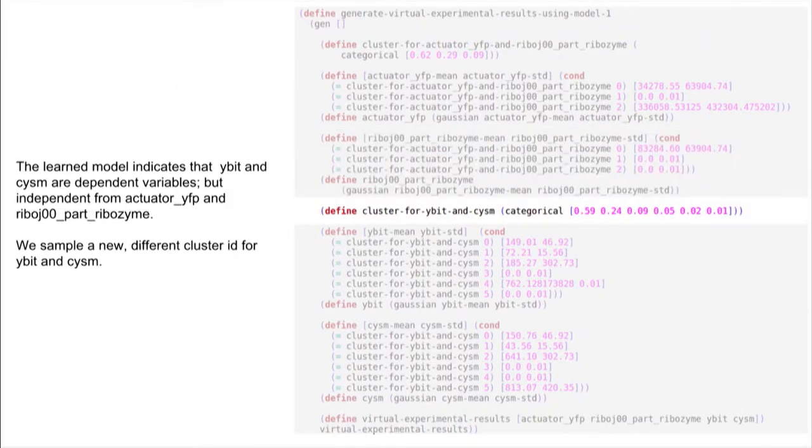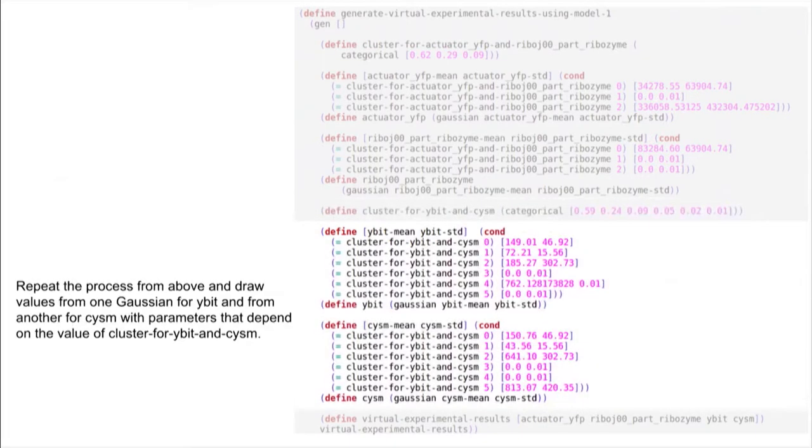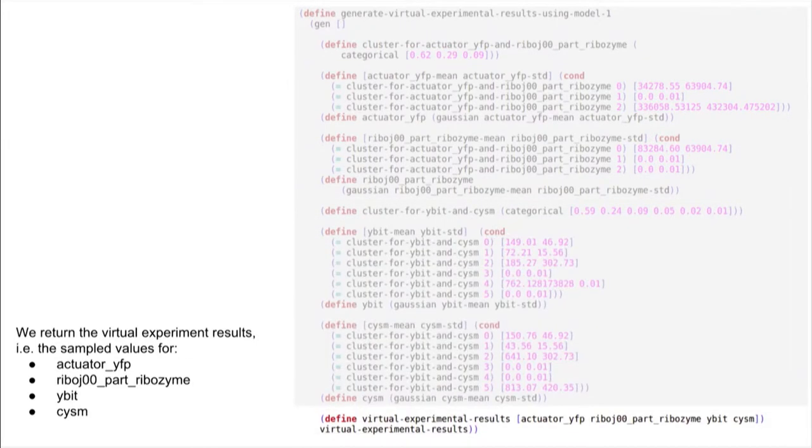But also the two other genes that are not part of the genetic circuit that is designed in this experimental data set, they are drawn from a different mixture model. So we have to draw a new cluster ID. And you can see that now we draw a cluster ID from a mixture model with six components, not three anymore. We repeat the process. And what we get out is a new row of the data table of the four model columns. So we have a virtual experiment result by forward executing this program.